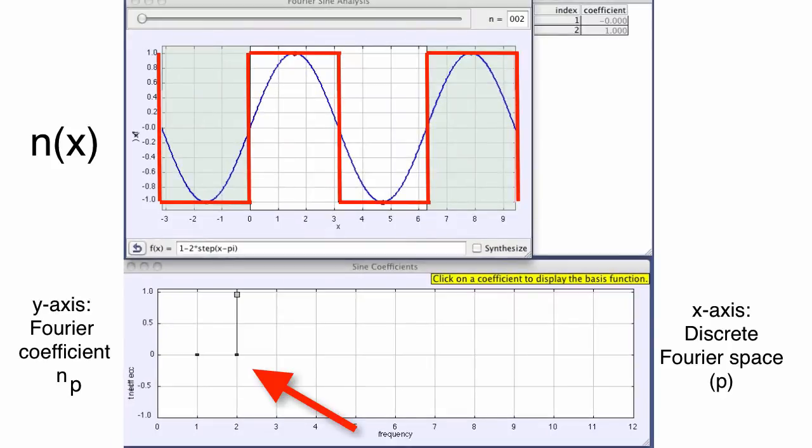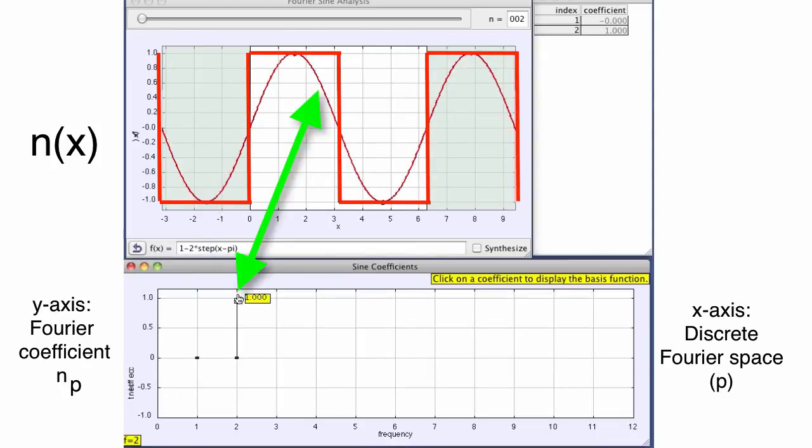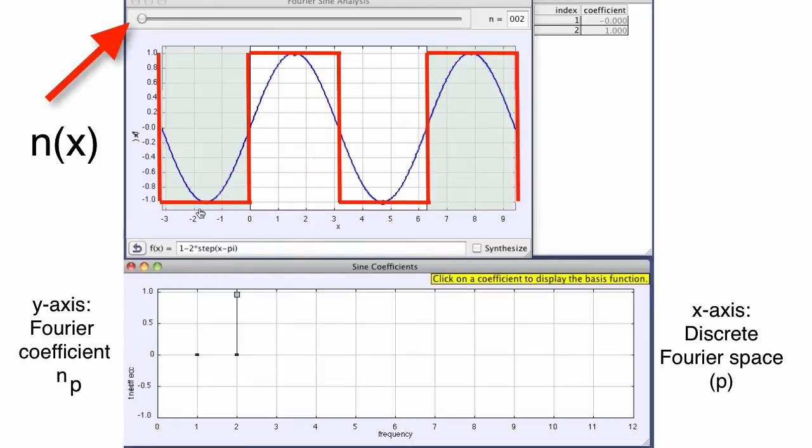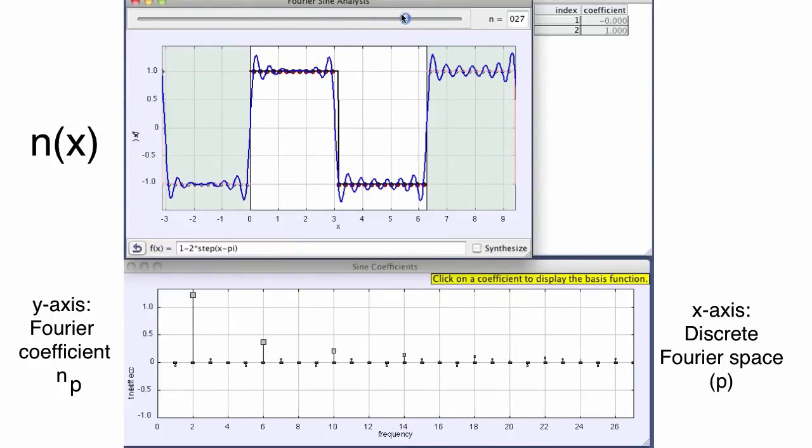And down below, we can see a graphical representation of the magnitude of the Fourier coefficients. Clicking on each one, we can see the individual contributions. Let's increase the number of terms then, and see if we get a better fit to the square wave. Now we see that the fit is much better and the Fourier coefficients decay away. As we move to shorter and shorter wavelengths, each makes a smaller adjustment to improve the fit.